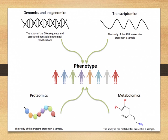We already know the functions of many genes, and in functional genomics we try to use that current knowledge of gene function to develop models that link genotype and phenotype. To establish that link, we can use various functional genomics approaches depending on our focus. We can do it at the DNA level, RNA level, protein level, or even at the metabolite level. The first approach is at the DNA level: genomics and epigenomics — the study of DNA sequence and associated heritable biochemical modifications.